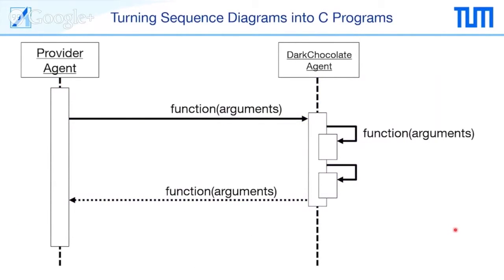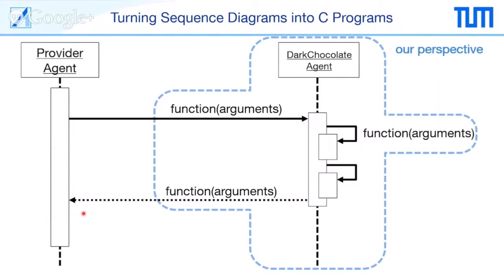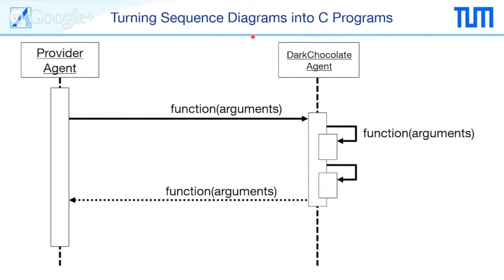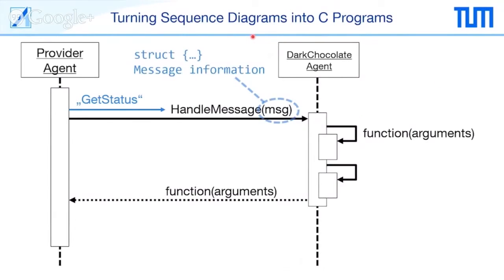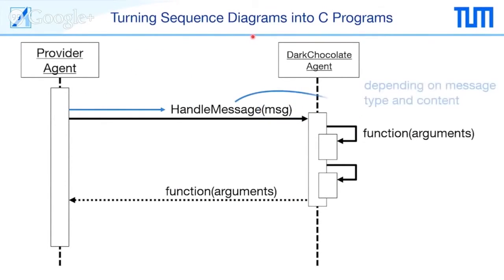Your task is to turn this into a C program, so we need to go into a little more depth. We send functions and get back functions with arguments, and it should be done in C — we hope C is already available from your bachelor studies. We look from the perspective of the dark chocolate agent into the system — this is what you have to implement.